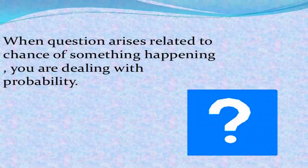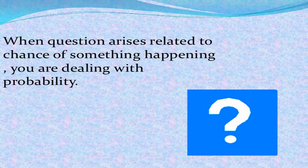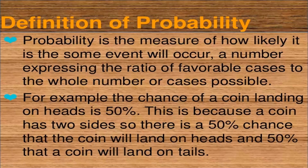When questions arise related to the chance of something happening, you are dealing with probability. Probability is the measure of how likely it is that some event will occur — a number expressing the ratio of favorable cases to the whole number of cases possible. For example, the chance of a coin landing on heads is 50%, because a coin has two sides — 50% chance it lands on heads and 50% chance it lands on tails.